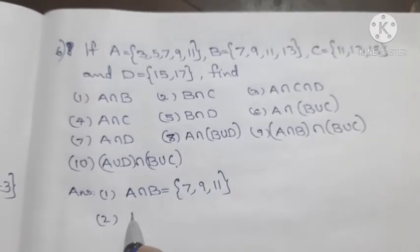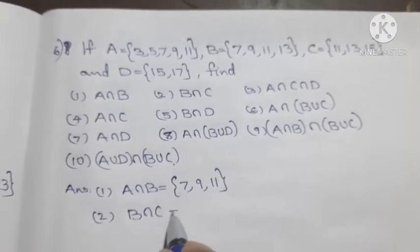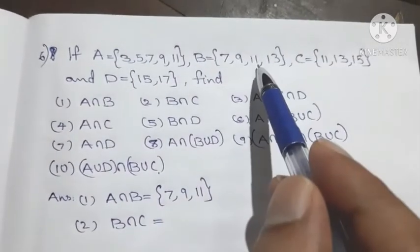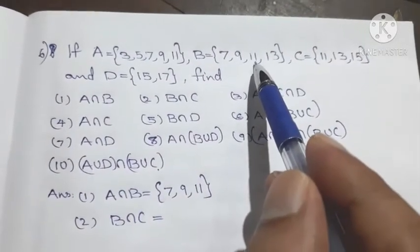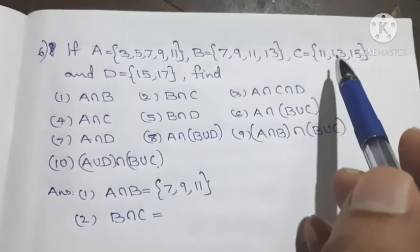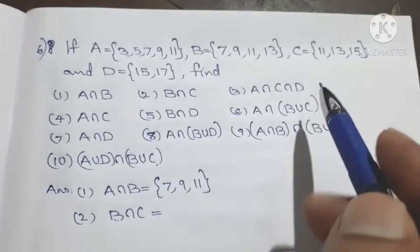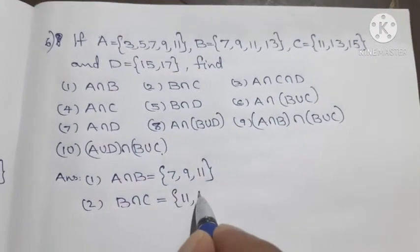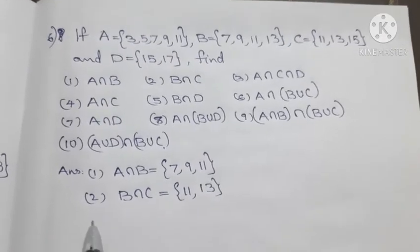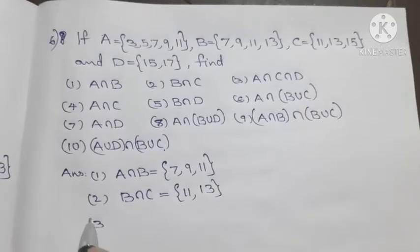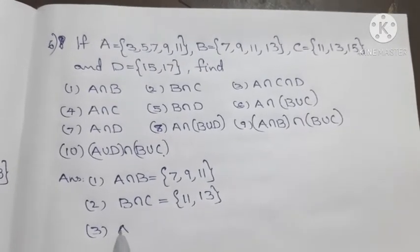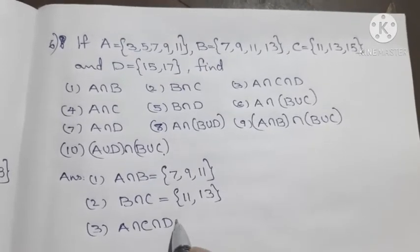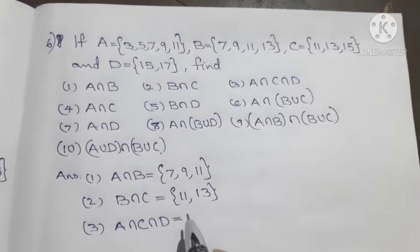Now B intersection C: the common elements between B and C are 11 and 13. So B intersection C equals set {11, 13}.